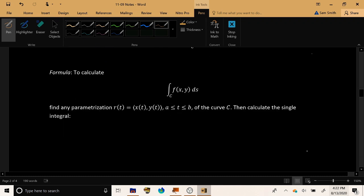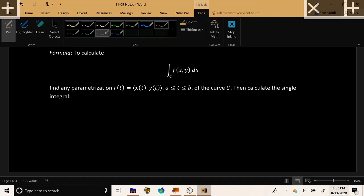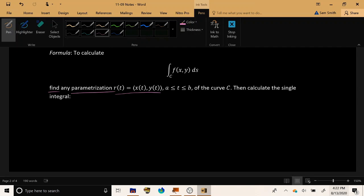Now to actually calculate line integrals, we use a special formula to transform them into single integrals as follows. The first thing that you need to do is you need to find a parametrization for that curve c that you're given. Let's call it r of t. And let's call its component functions x of t, y of t, for t between a and b.